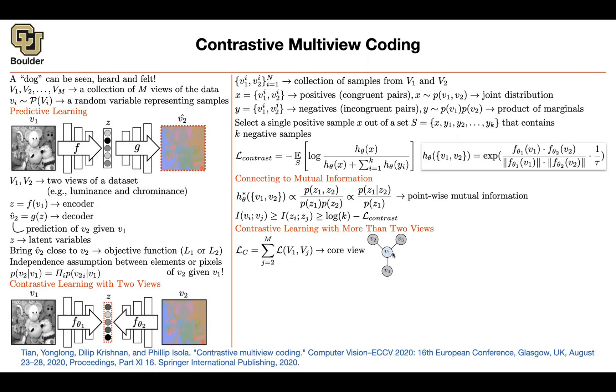You can pick one of those views among perhaps four views as the core view and compare everybody else to the core view using your contrast and then sum over all of these losses. And this way you can handle four views or more.